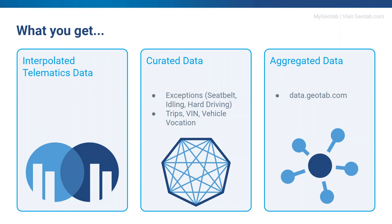We also send through your trips from MyGeotab, the VIN data — so we build a VIN history table — and the vehicle vocation data. Vehicle vocation data is where we look at a vehicle's driving behavior and classify what type of service the vehicle provides. This data set is included because we use it in projects on the data and analytics team. Finally, the aggregated data is everything you see on data.geotab.com — those free data sets we've already made available — and you can start working with that data, either on its own or combined with other data you bring in.